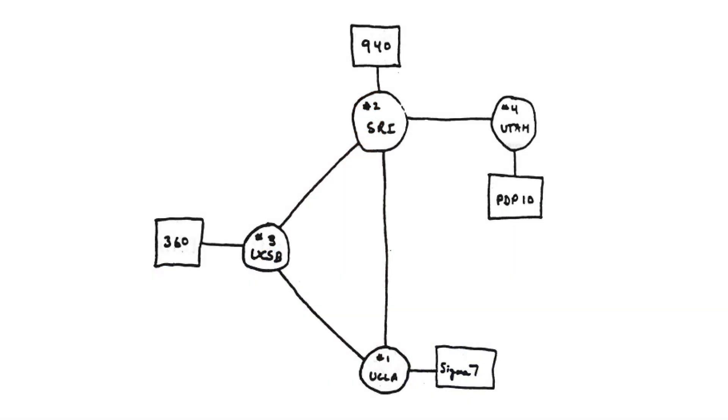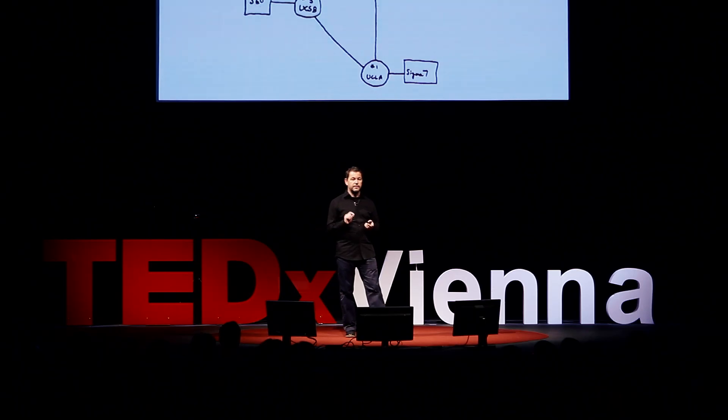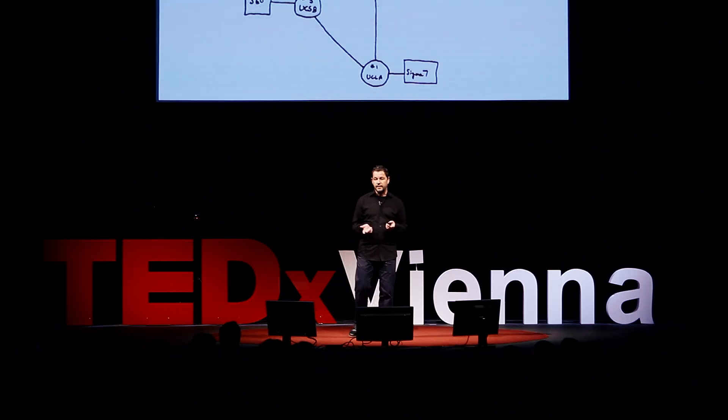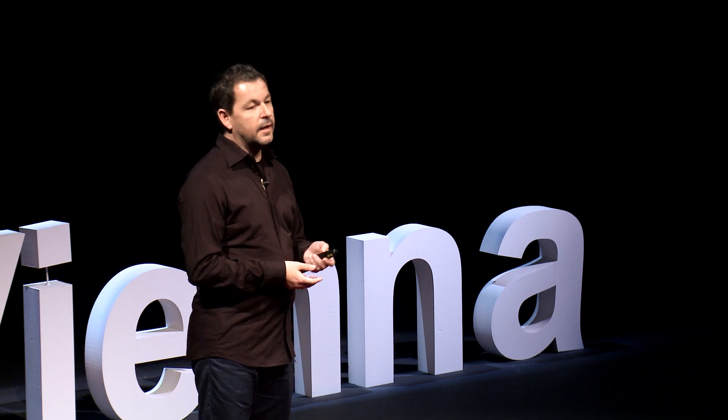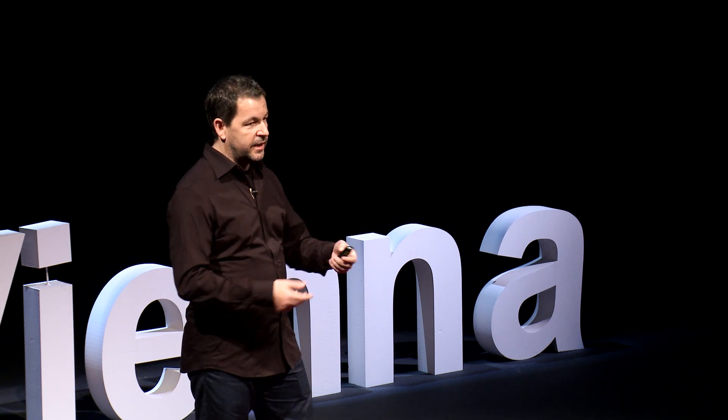This was something new. You couldn't just store numbers — you could store text on these machines. This is a very simple scribble for a great idea which was only possible thanks to ASCII. It's the first sketch for the internet called ARPANET, the first version of it.